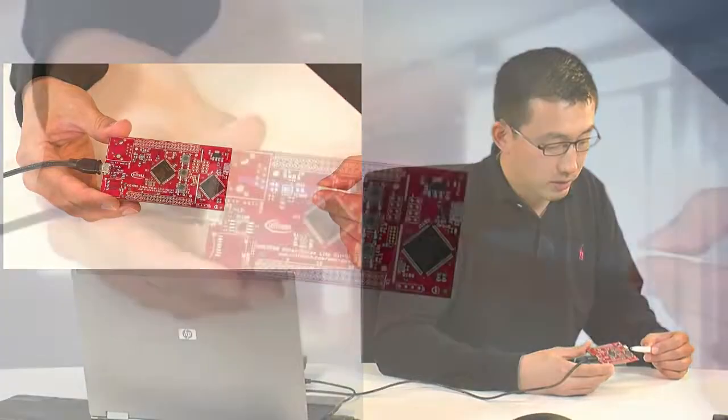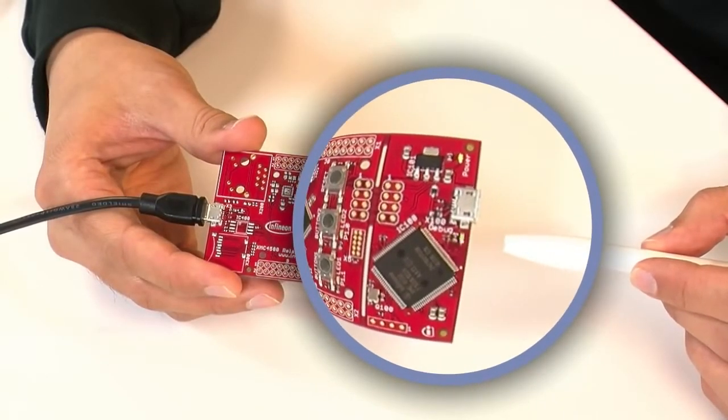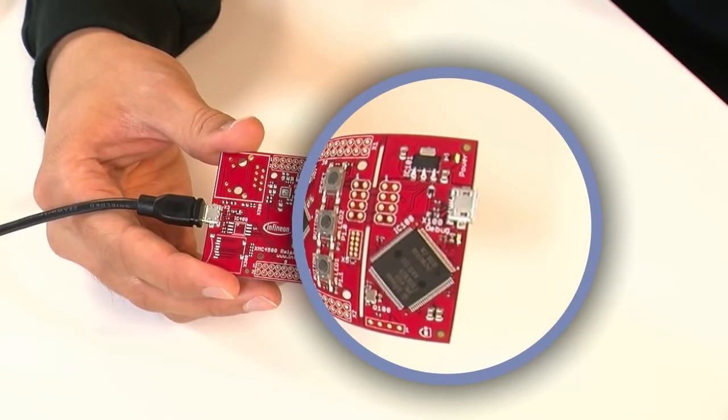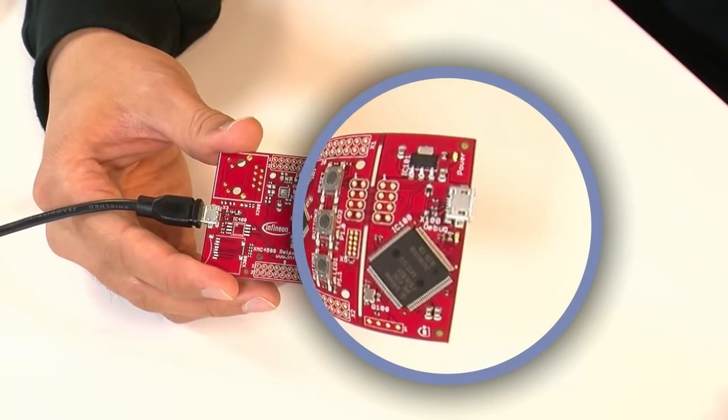You see a blinking green debug LED indicating a non-active debugger. To make this debugger active you have to install the toolchain on your PC. This will be explained in another session.